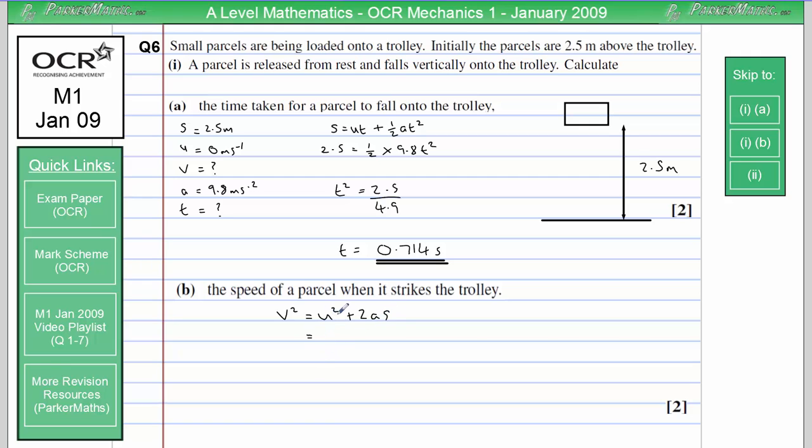Once again, U is 0, so that bit disappears. So we get 2 times 9.8 times 2.5. Well, 2 times 2.5, that's 5. 5 times 9.8 is like timesing by 10 minus it, so we get 49. So V is going to equal 7 metres per second.